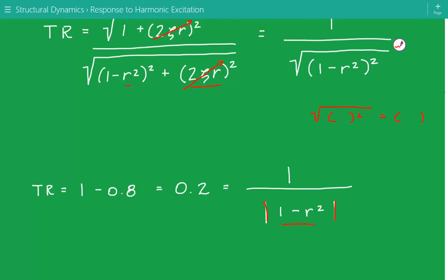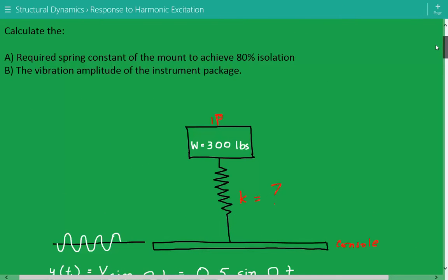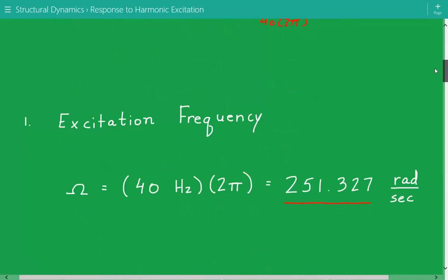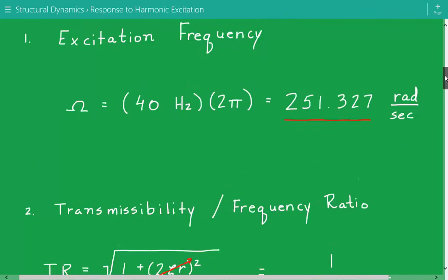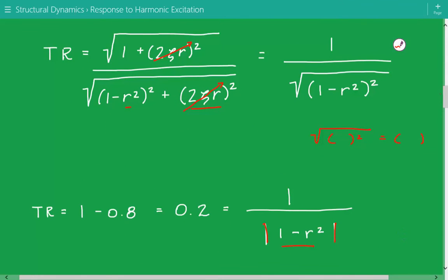That's the right-hand side of the equation. The left-hand side, transmissibility, equals 1 minus the isolation that we're required. We're required to achieve 80% isolation, so that's going to be equal to 1 minus 0.8, which is equal to 0.2. So 0.2 equals 1 divided by the absolute value of 1 minus r squared.